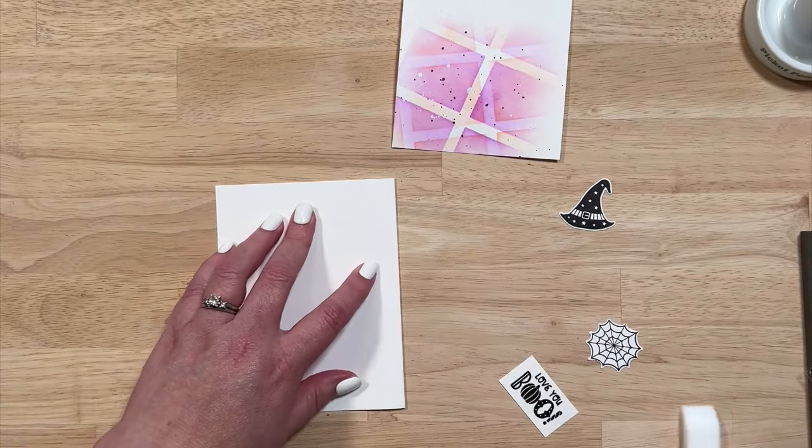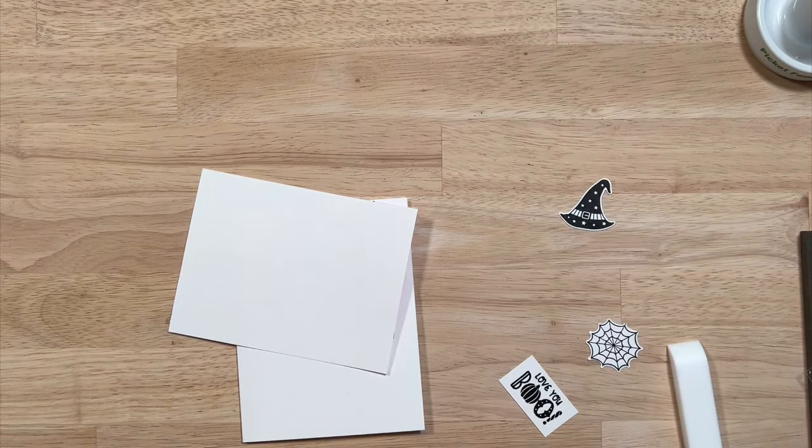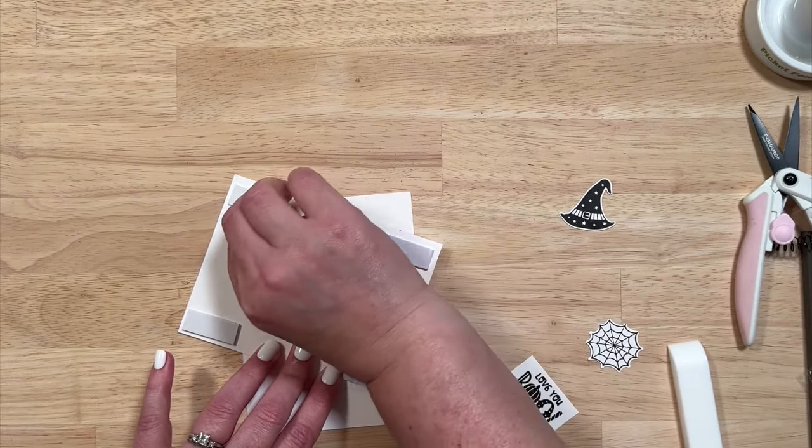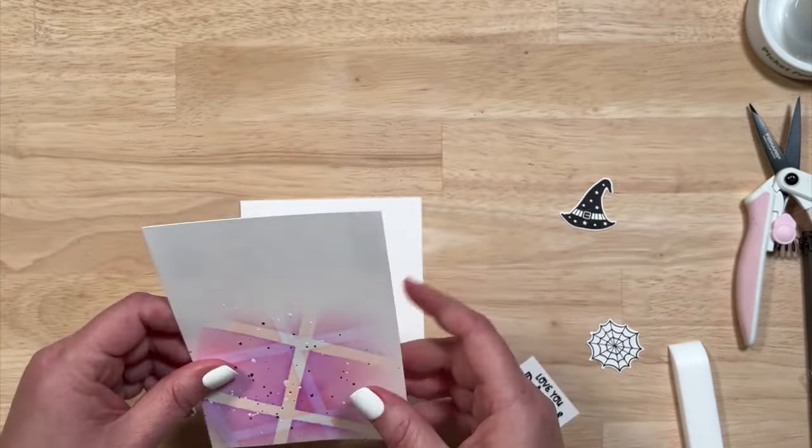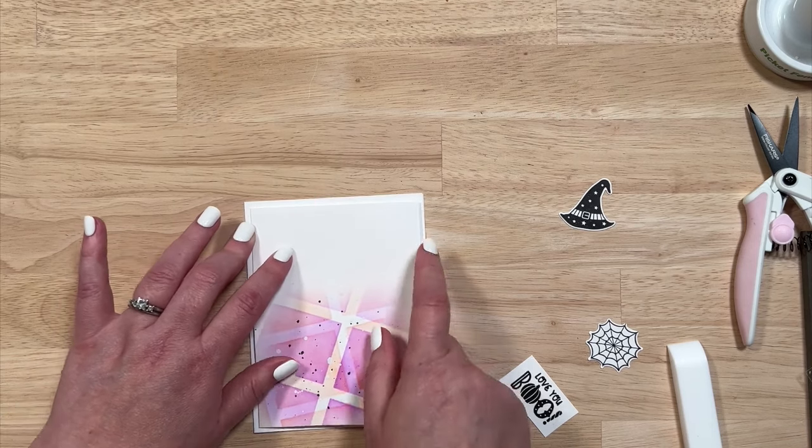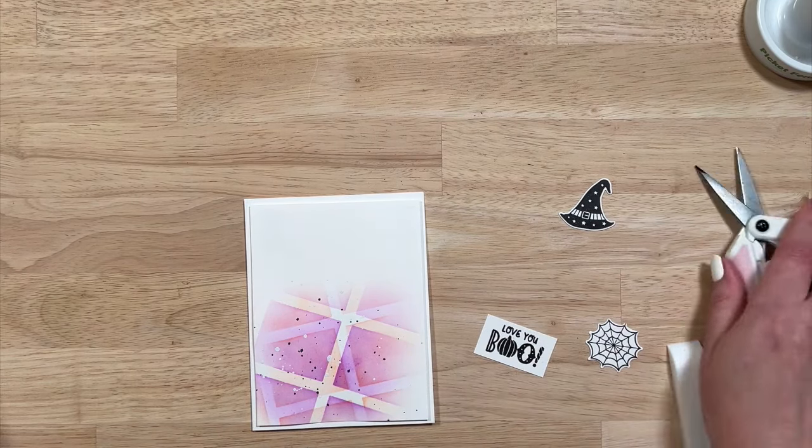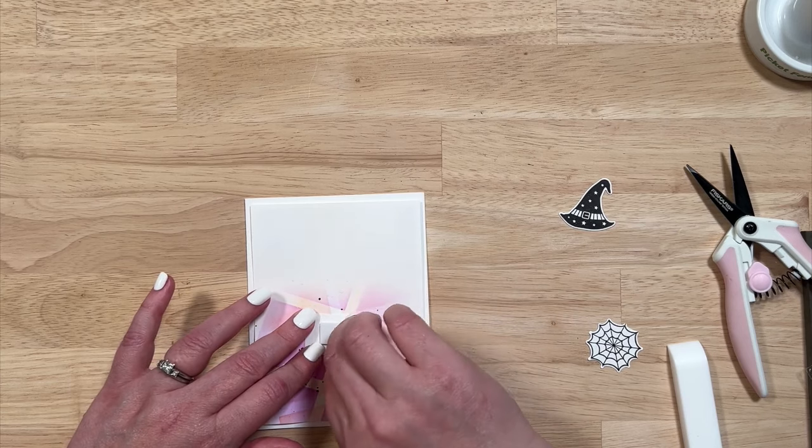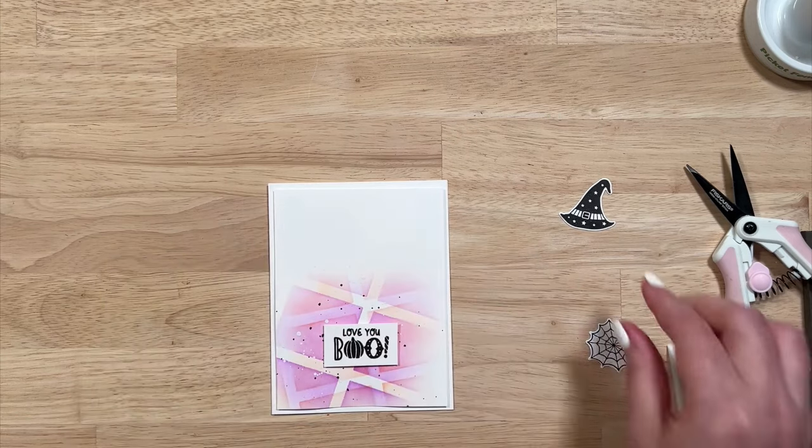So now we're going to put our card together. I'm going to start with a white card base. Use my bone folder again. Nice, crisp edge. I'm going to use some foam tape on the back of this panel. Peel off the backings. And then I'm going double dimension today, like doubling up on that foam. A lot of times I won't because that'll just make it a little bit more mail friendly, putting it through the post office. But for this one, I'm going to, I just love all the elements being popped up.